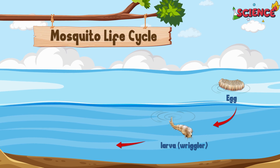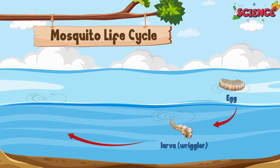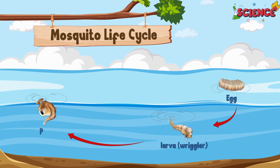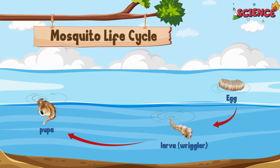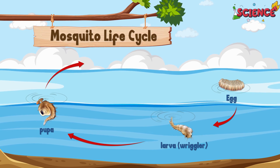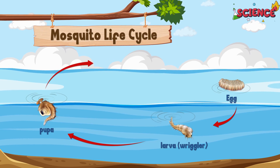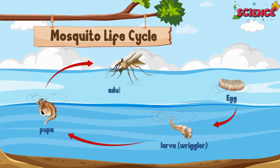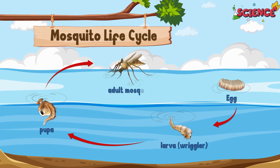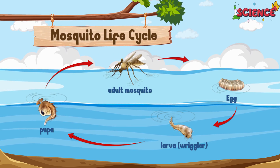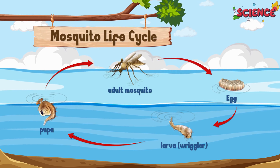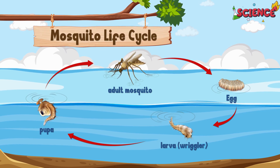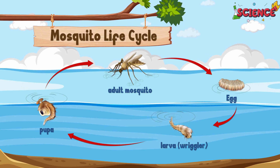Next, they turn into pupae. These pupae rest and get ready to change. And then, ta-da, an adult mosquito appears, ready to fly into the world. That's the life cycle of a mosquito, from egg to adult in just a few days.